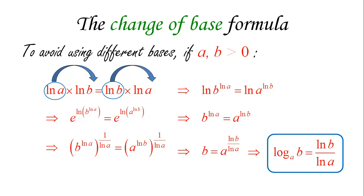This is the change of base formula: the logarithm base A of B equals ln B divided by ln A. It doesn't matter what A and B are. You can remember it by noting that in log base A of B, A is written lower than B — and in the formula, B goes on top and A goes on the bottom. We can use this formula whenever we need to convert any logarithm to our natural logarithm.